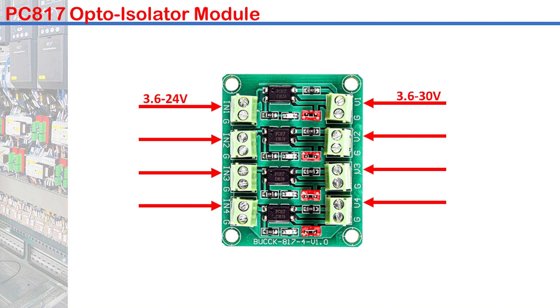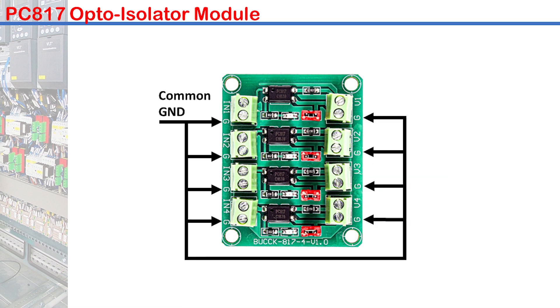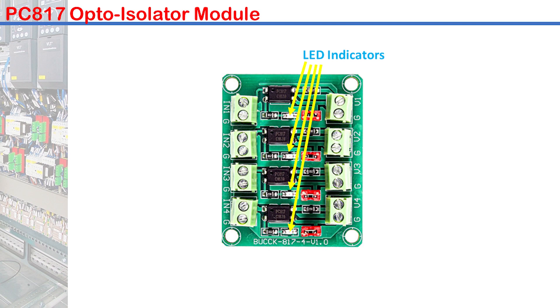The 4 opto-isolators input and output all have a common ground, but the ground of each output can be isolated by removing these jumpers. LEDs are here to indicate the logic level of any of the inputs.